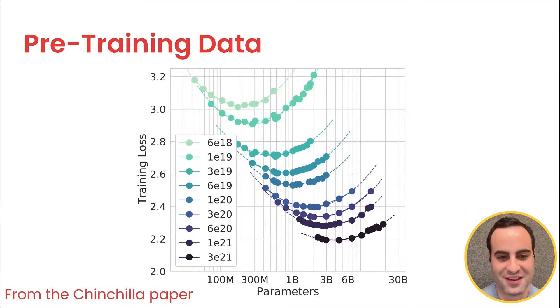Each of these different colors, each of these different curves, is a different budget. Those numbers in that legend of the plot are different budgets in terms of FLOPs, anywhere from 6e18—that's the uppermost curve—to 3e21, which is almost three orders of magnitude more compute.